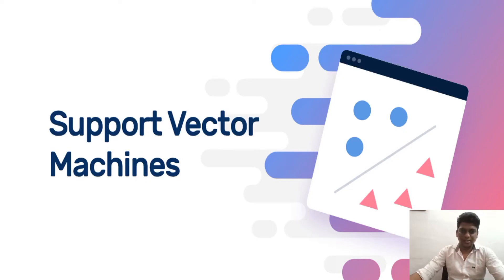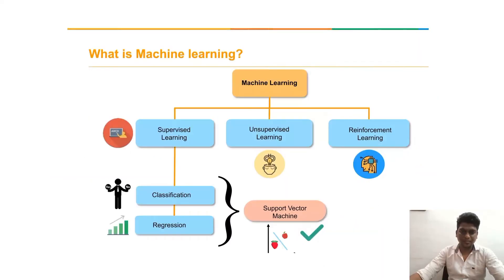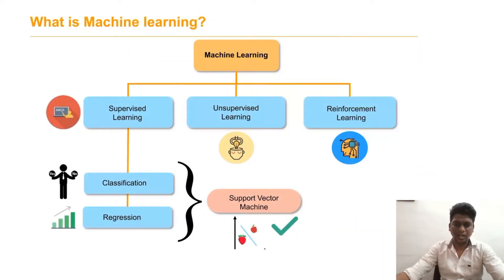Warm welcome to you all. Today we will discuss support vector machines in machine learning and its classification. It has three types: supervised, unsupervised, and reinforcement learning methods. Support vector machine comes under supervised learning.